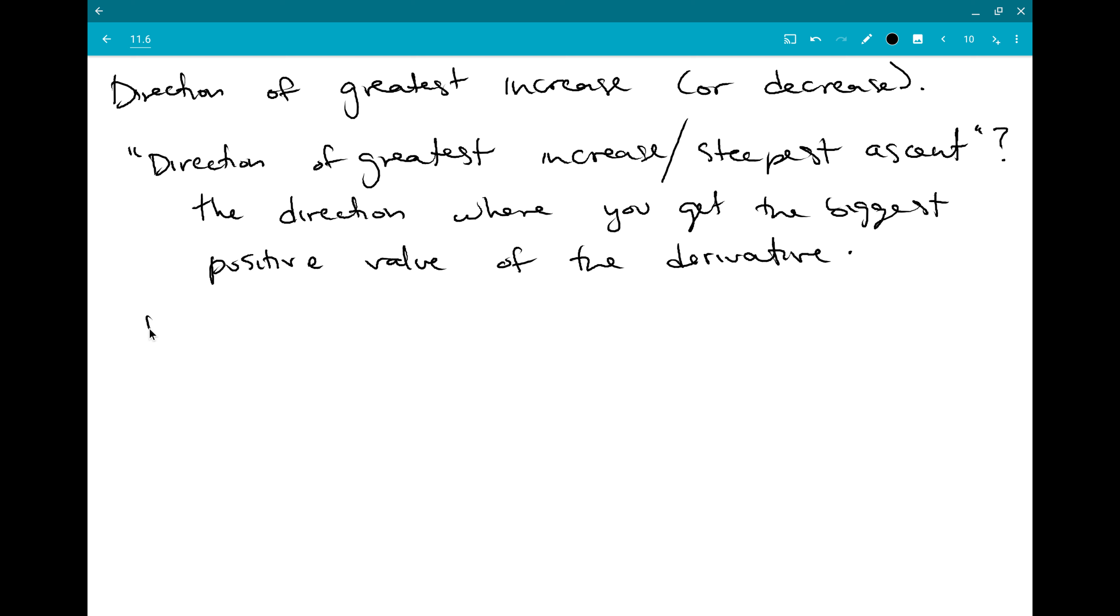That opposite direction of greatest decrease or steepest descent is going to be the direction where you get the biggest negative